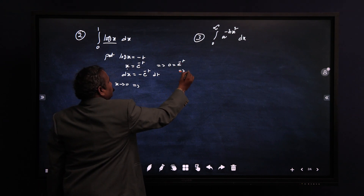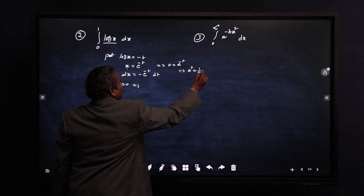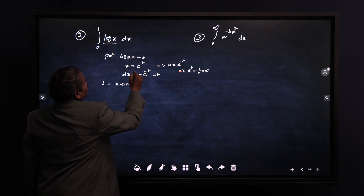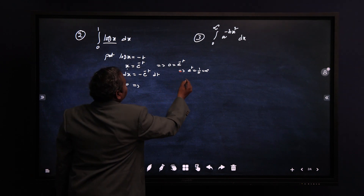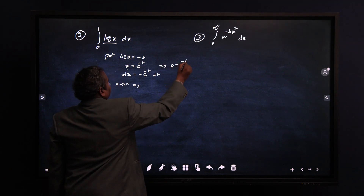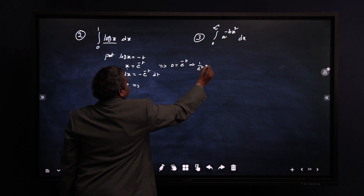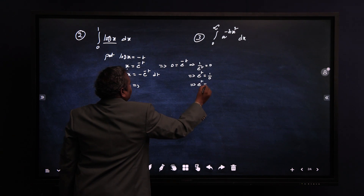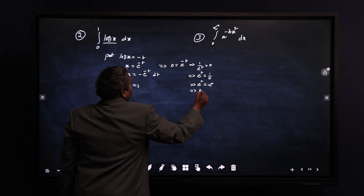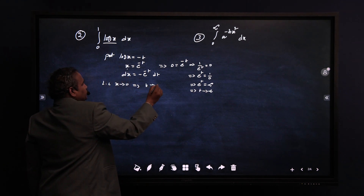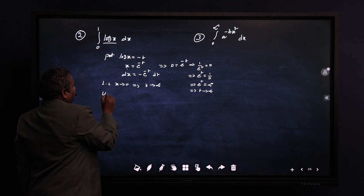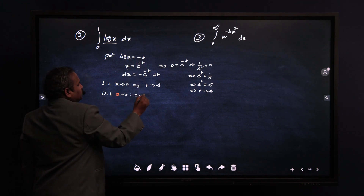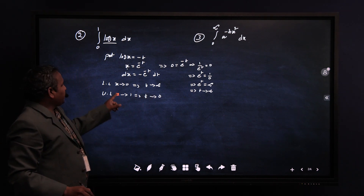For the lower limit, x = 0: substituting gives e^(-t) = 0, so e^t = 1/0 = infinity, meaning t tends to infinity. For the upper limit, x = 1: log(1) = 0, so -t = 0, meaning t = 0. Therefore, the x-limits change to t-limits from infinity to 0.